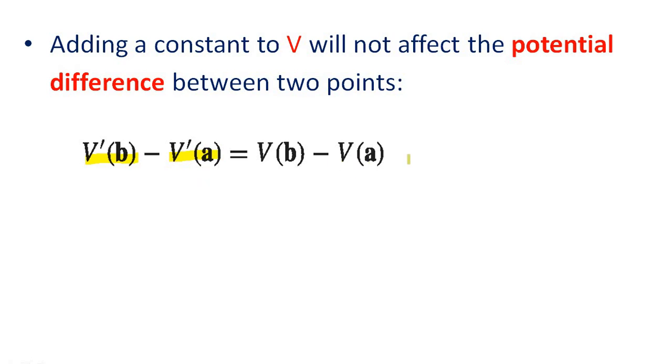This k can be cancelled out. Adding a constant will not affect the potential difference.